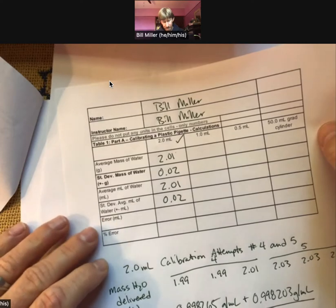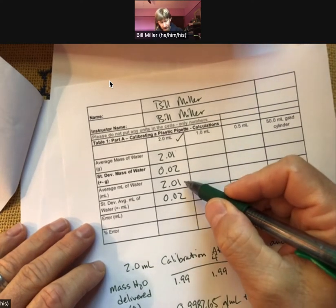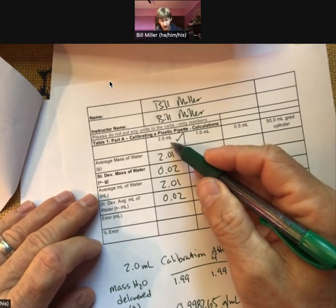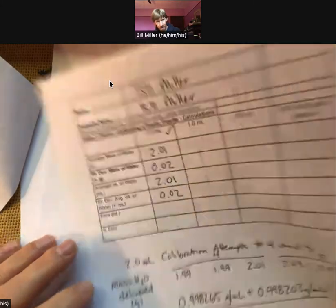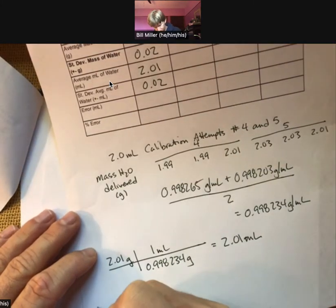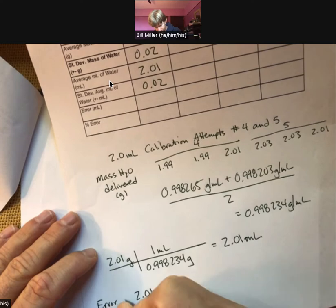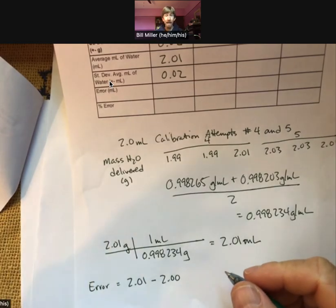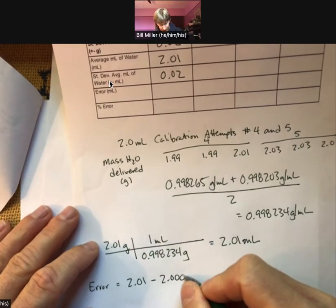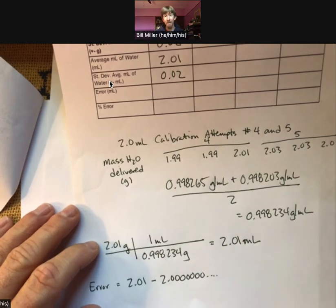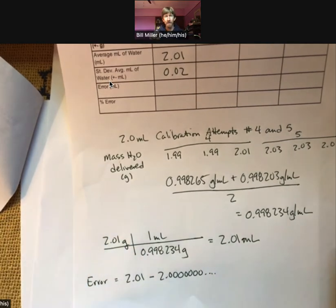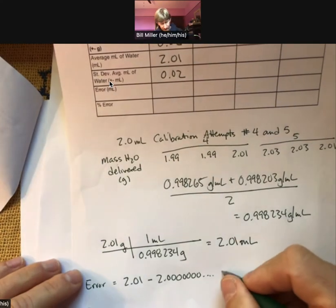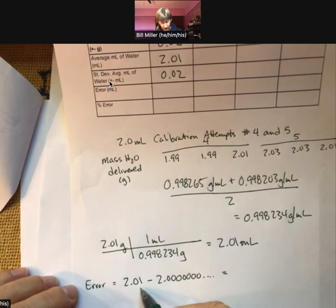Now the error. The error is the difference between your average milliliters and what you were trying to go for. So for us, it's 2.01 minus 2.00. In the handout for this experiment, it says treat this as if it has infinite sig figs because we're going for exactly two, not anything with sig figs. That makes sure that we limit our sig figs here.